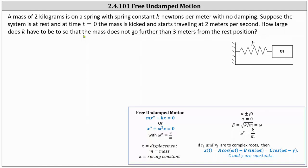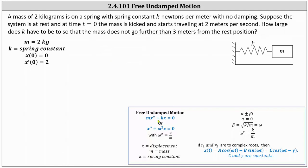Let's first record the given information. We know the mass m is two kilograms, k is the spring constant. Because the system begins at rest, x of zero equals zero, and because at time zero the mass is kicked and travels two meters per second, the initial velocity is two meters per second, indicated by x prime of zero equals two. Because we have free undamped motion we can model the system using the differential equation m x double prime plus k x equals zero, which is a second order linear homogeneous differential equation with constant coefficients.